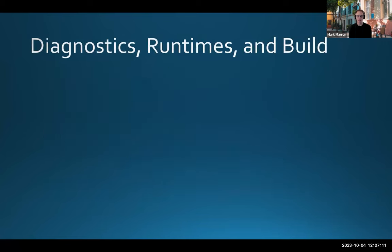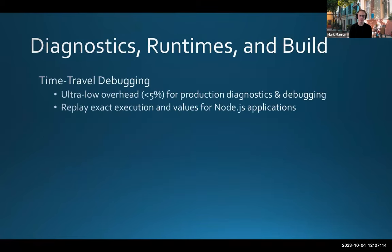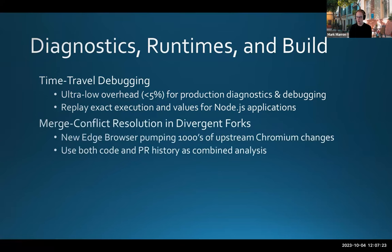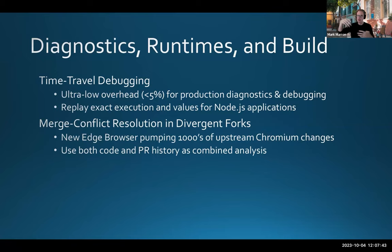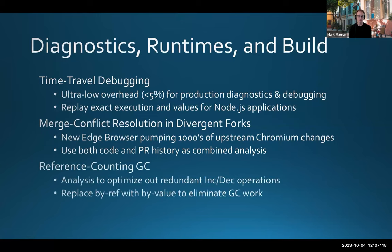I've also done some work in diagnostics, runtimes, and build systems. I spent a couple years with the Chakra JavaScript engine team building a time-travel debugger for Node.js. When they did a little pivot and started becoming a fork of Chromium, I worked on the problem of: we have thousands of developers and huge amounts of changes from the upstream Chromium open-source project. How do we automate the process of merging these streams of changes and resolving all the conflicts?